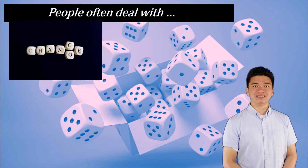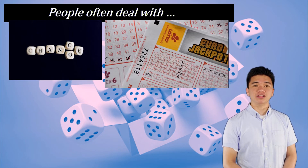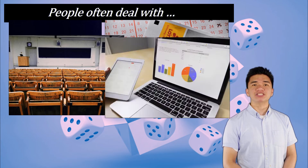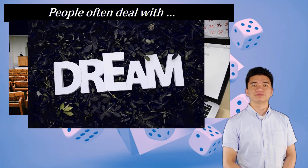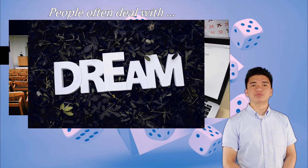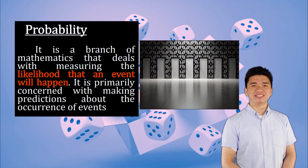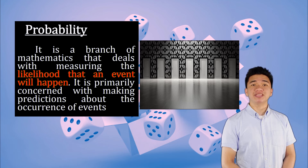People often deal with chances — chances of winning in a lottery, chances of getting high grades in class, chances of raising company sales, or even chances of achieving one's dreams. This lesson focuses on chances, a concept known in mathematics as probability. Probability is a branch of mathematics that deals with measuring the likelihood that an event will happen. It is primarily concerned with making predictions about the occurrence of events.